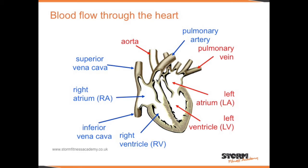It first comes in via the superior and the inferior vena cava. It then collects in the right atrium. When the right atrium fills up, it pushes a valve open, sending the blood down into the right ventricle. The right ventricle contracts and pushes blood out through the pulmonary artery, which then delivers the blood up towards the lungs. Once it's in the lungs, the deoxygenated blood becomes oxygenated, and it then returns back to the heart via the pulmonary vein.